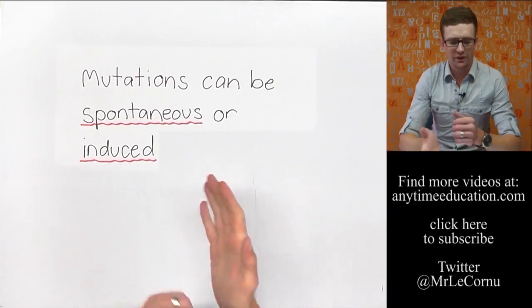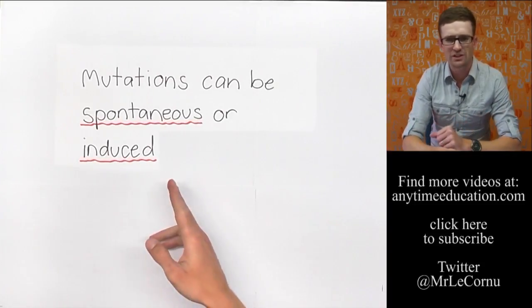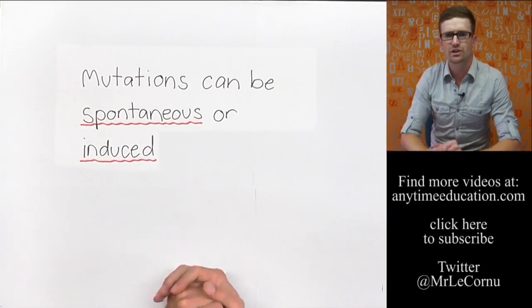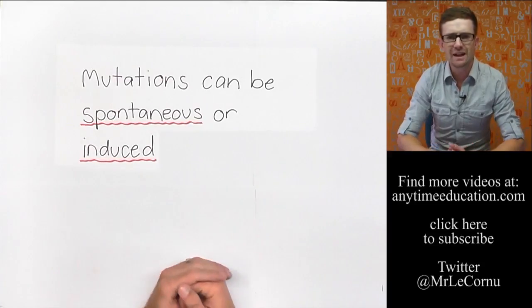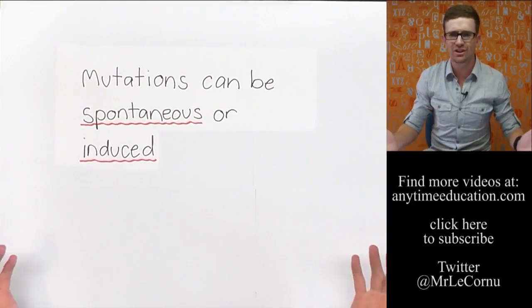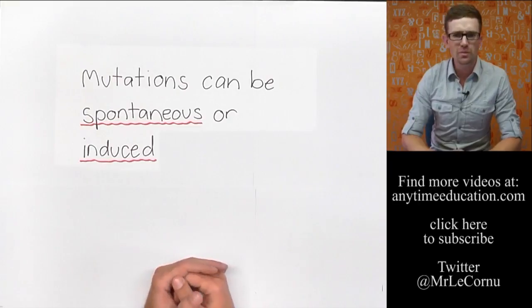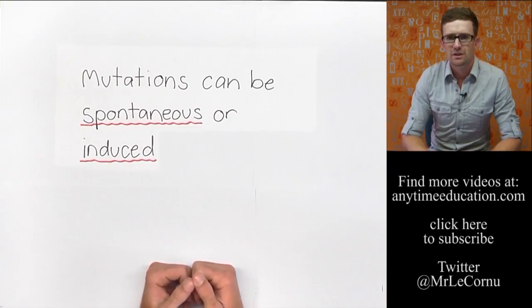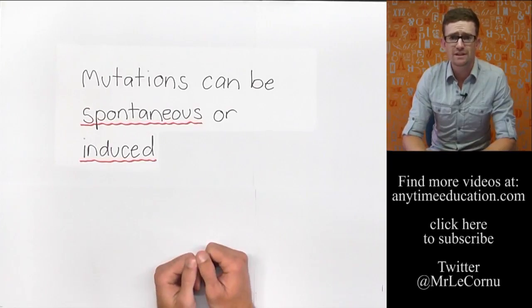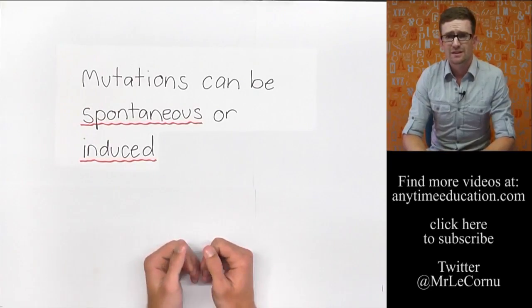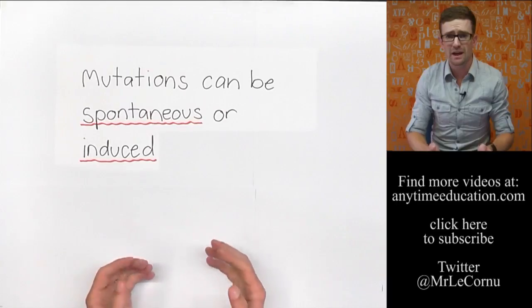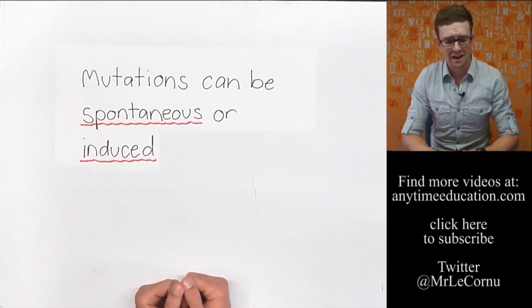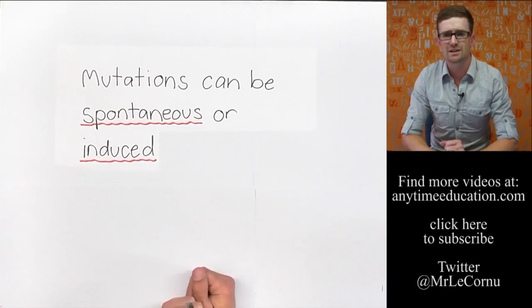So first things first, mutations can be spontaneous or induced. Spontaneous mutations are mutations that just happen. Normally, they just happen during DNA replication. It's not always a process that occurs perfectly. Sometimes, during DNA replication, mistakes are made, and they are spontaneous mutations.